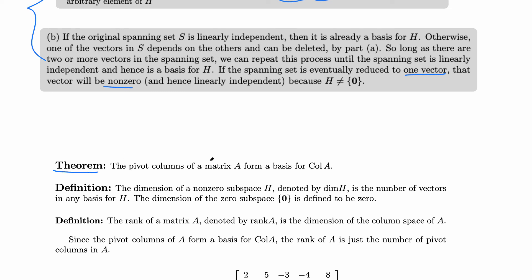Another theorem: the pivot columns of a matrix A form a basis for Col(A) — the column space of matrix A. When we row reduce, we find pivots in certain columns, and those pivot columns form a basis for Col(A). We will see an example of this later.